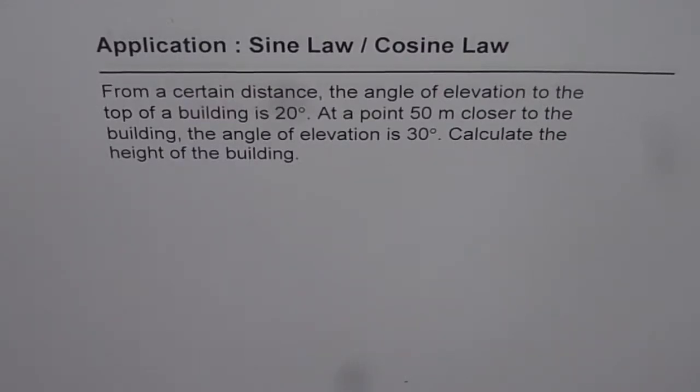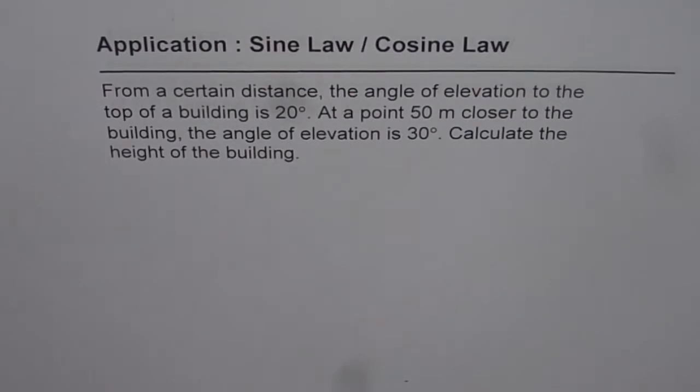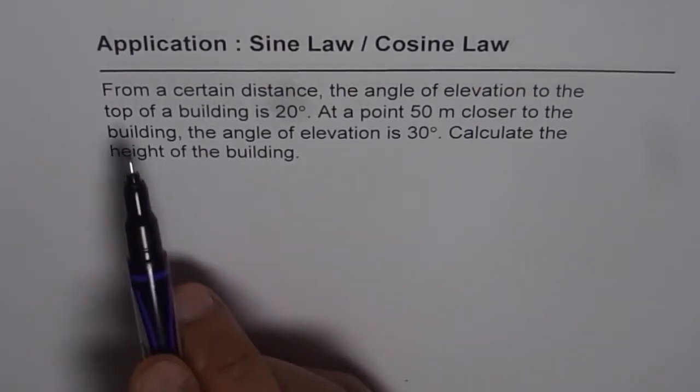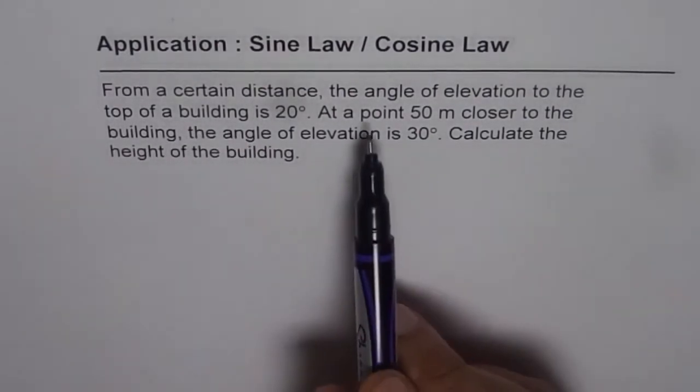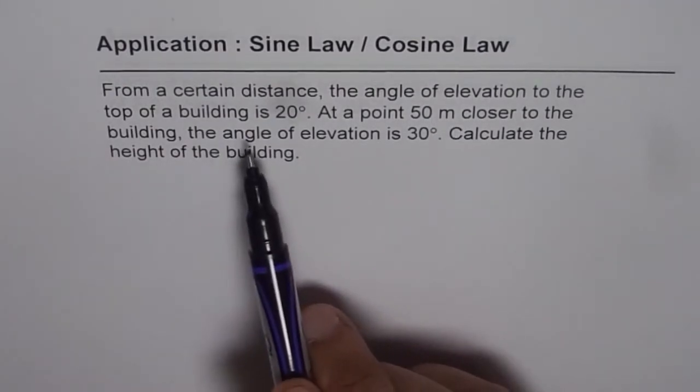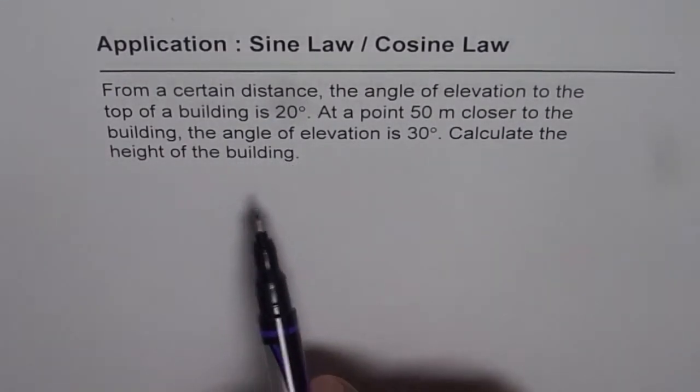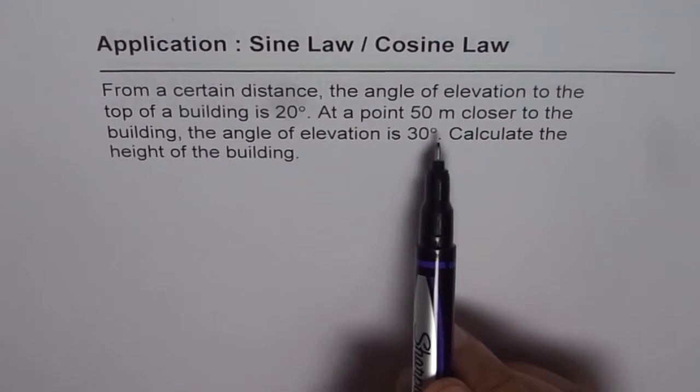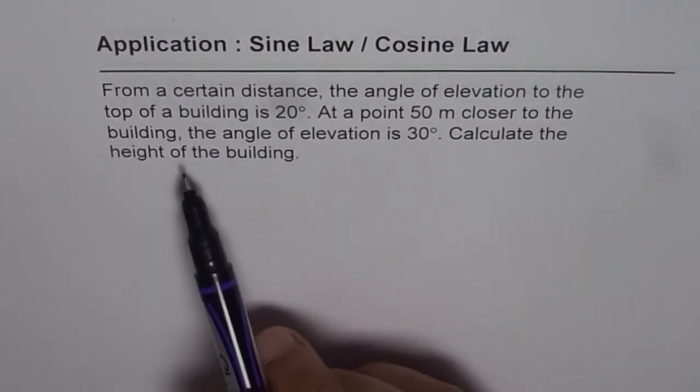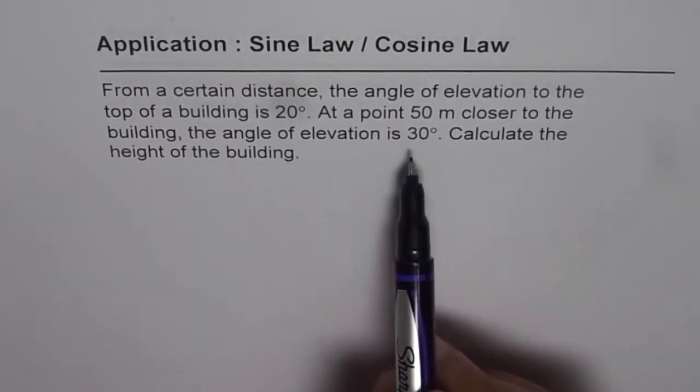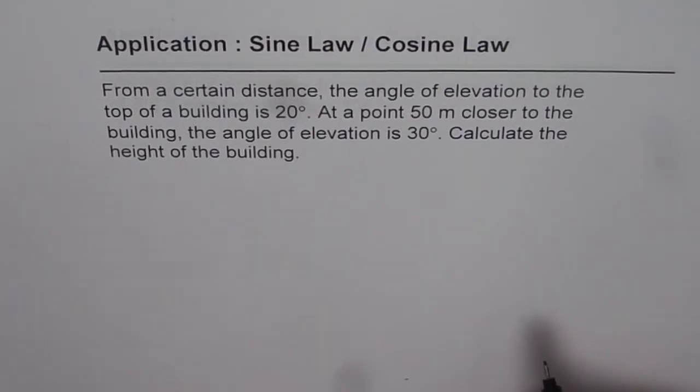Let us understand how to apply Sine Law or Cosine Law. Here is an application problem. It says, from a certain distance, the angle of elevation to the top of the building is 20 degrees. At a point 50 meters closer to the building, the angle of elevation is 30 degrees. Calculate the height of the building.